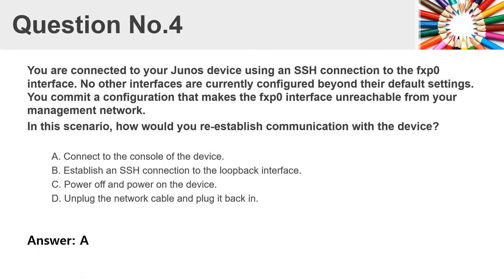Question number four. You are connected to your Junos device using an SSH connection to the FXP0 interface. No other interfaces are currently configured beyond their default settings. You commit a configuration that makes the FXP0 interface unreachable from your management network. In this scenario, how would you reestablish communication with the device? A. Connect to the console of the device. B. Establish an SSH connection to the loopback interface. C. Power off and power on the device. D. Unplug the network cable and plug it back in. Answer: A.